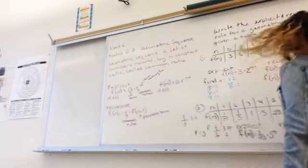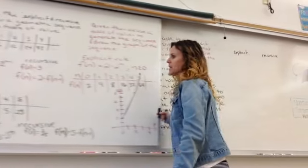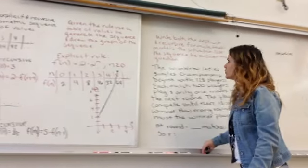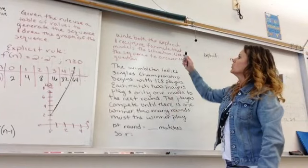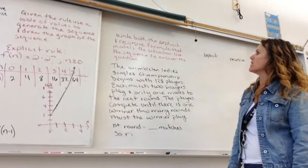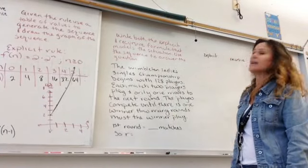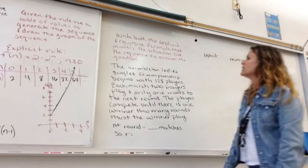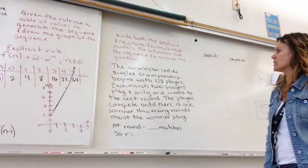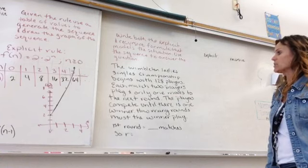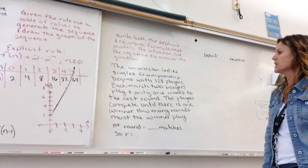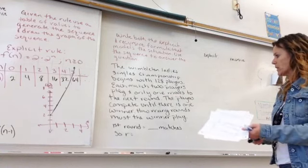Alright. So we're going to look at one modeling type problem and how to use it in a real-life situation. We're going to write the explicit and recursive formula that models the situation. We're going to use the sequence to answer these questions. The Women's and Ladies Singles Championship begins with 128 players. Each match, two players play, and only one moves to the next round.